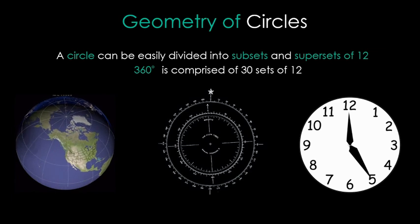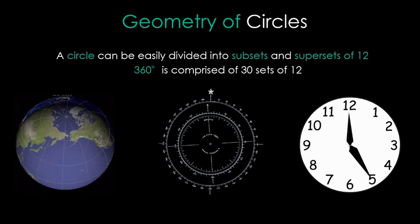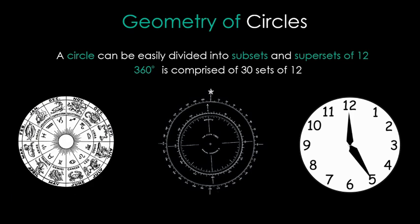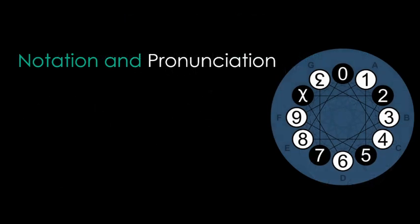And since people in ancient times divided the night sky into 30-degree slices as well, we can see that there are 12 signs of the zodiac. And since the months are based on the circular orbit and circular rotation of the moon, we can also see how we arrived at a 12-month calendar as well. The question then remains, how should we write it, and how should we pronounce numbers in duodecimal?